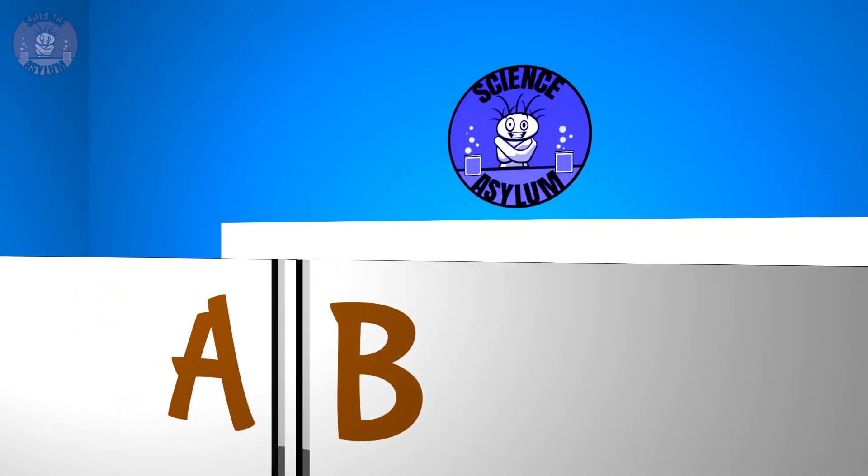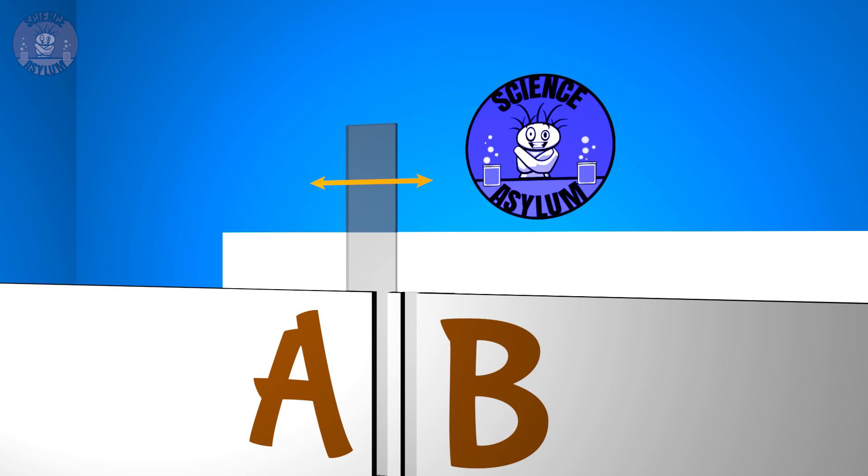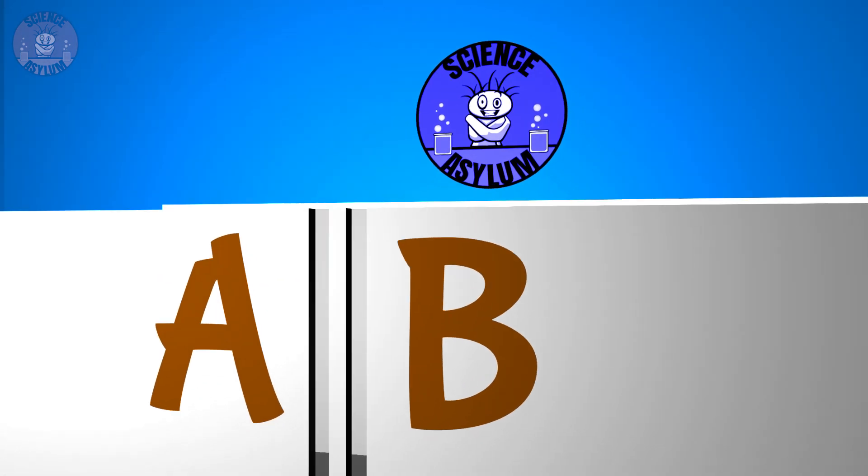But what if we tried to detect which slit each photon passed through? Sure, we could do that, but then we get a different result. Polarizers do a pretty good job of separating photons. Just after slit A, we'll put a horizontal polarizer, and just after slit B, we'll put a vertical polarizer. That way we'll be able to know which photon came from which slit. Unfortunately, now the pattern looks like this instead — no interference.